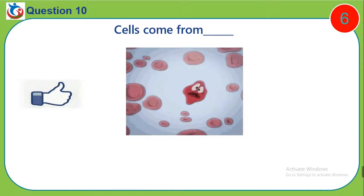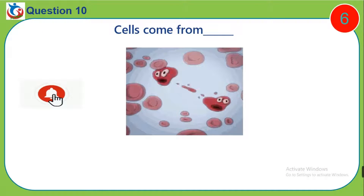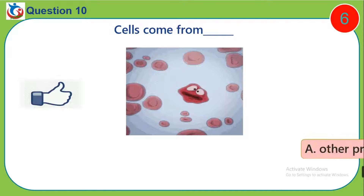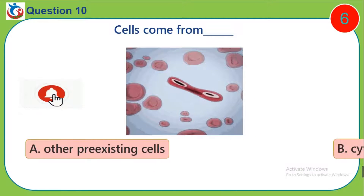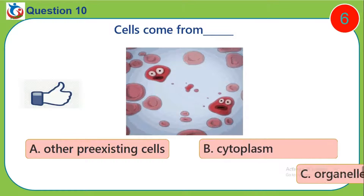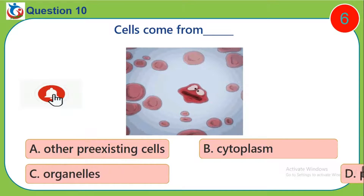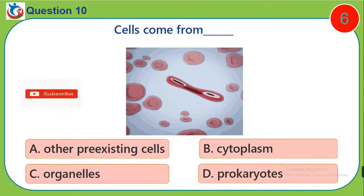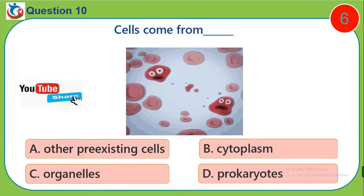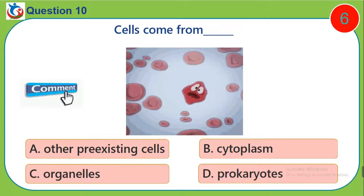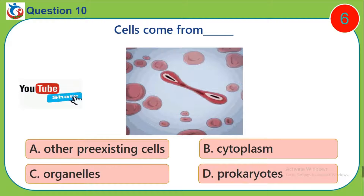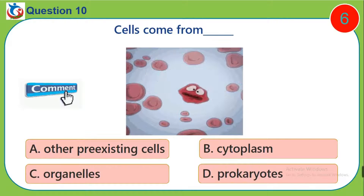Question 10. Cells come from? A. Other pre-existing cells. B. Cytoplasm. C. Organelles. D. Prokaryotes.